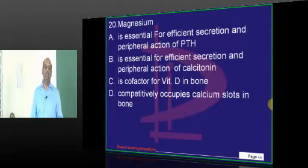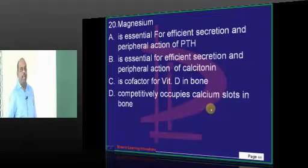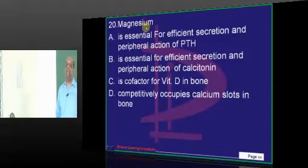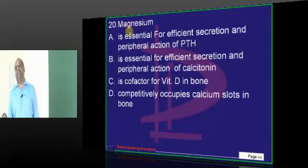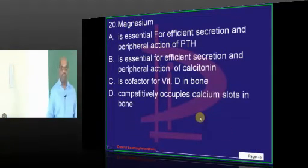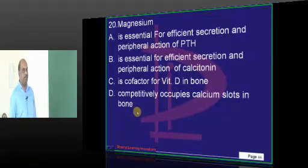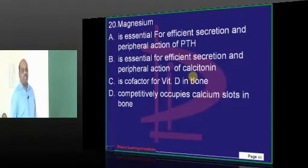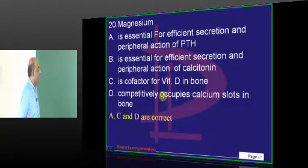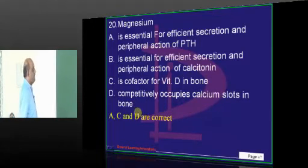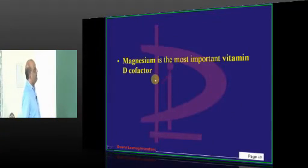Magnesium — this is a slightly challenging question. Is it needed for the action of PTH or calcitonin? This is a little controversial because three answers are correct. It seems the examiner forgot to frame it as an 'except' question. If framed as except: A, C, D are all correct statements — magnesium is needed for PTH action, it occupies calcium slots in the bone, and it is a cofactor for vitamin D.